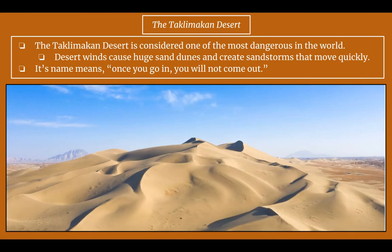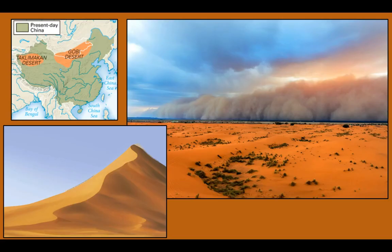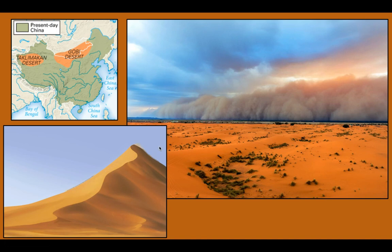The Taklamakan Desert is considered one of the most dangerous deserts in the world. Desert winds cause huge sand dunes and create sandstorms that move quickly. Taklamakan literally means 'once you go in, you will not come out,' which illustrates how dangerous it is. Here we see in the distance a massive sandstorm — when caught in one you just have to ride it out, cover yourself with clothes, and hope it doesn't last too long. Here's a massive sand dune, which would be dangerous if you're caught in it. The map shows the Taklamakan Desert in far west China.